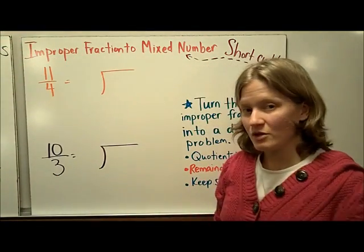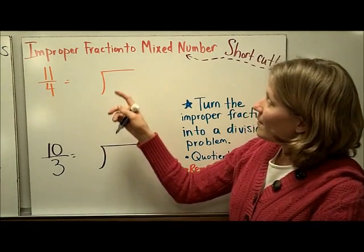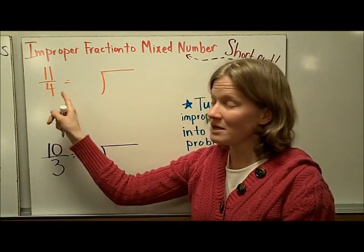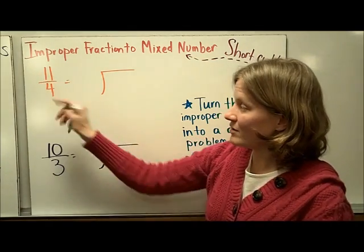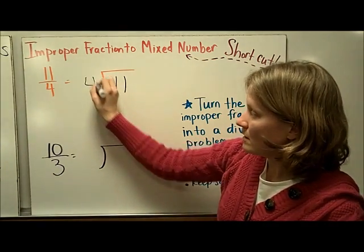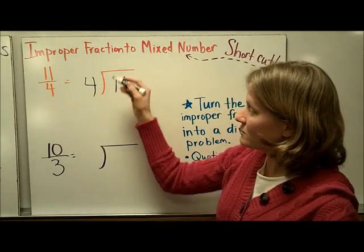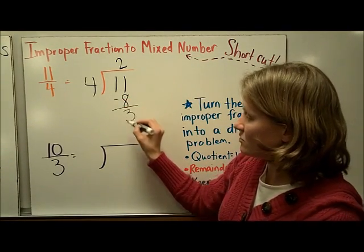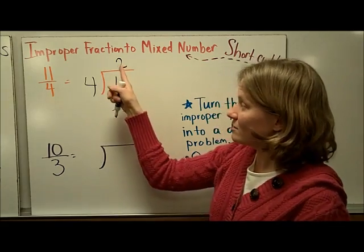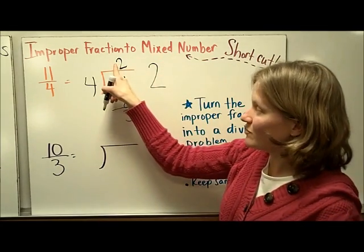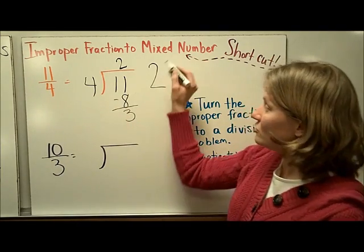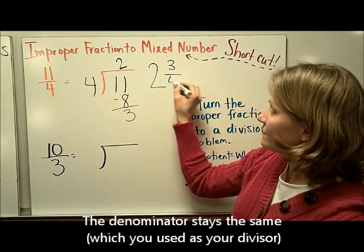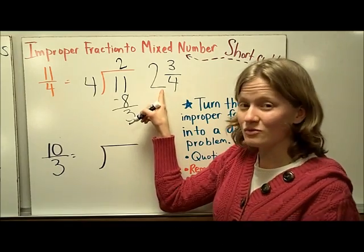There is a shortcut you can use to turn improper fractions into mixed numbers. We learned that fractions can be written as division problems, so 11 fourths is really 11 divided by 4. 4 goes into 11 two times; 2 times 4 is 8, and the remainder is 3. From here we can find our answer: the quotient becomes your whole number, the remainder becomes your numerator, and the divisor stays the same. So 11 fourths is the same as 2 and 3 fourths.